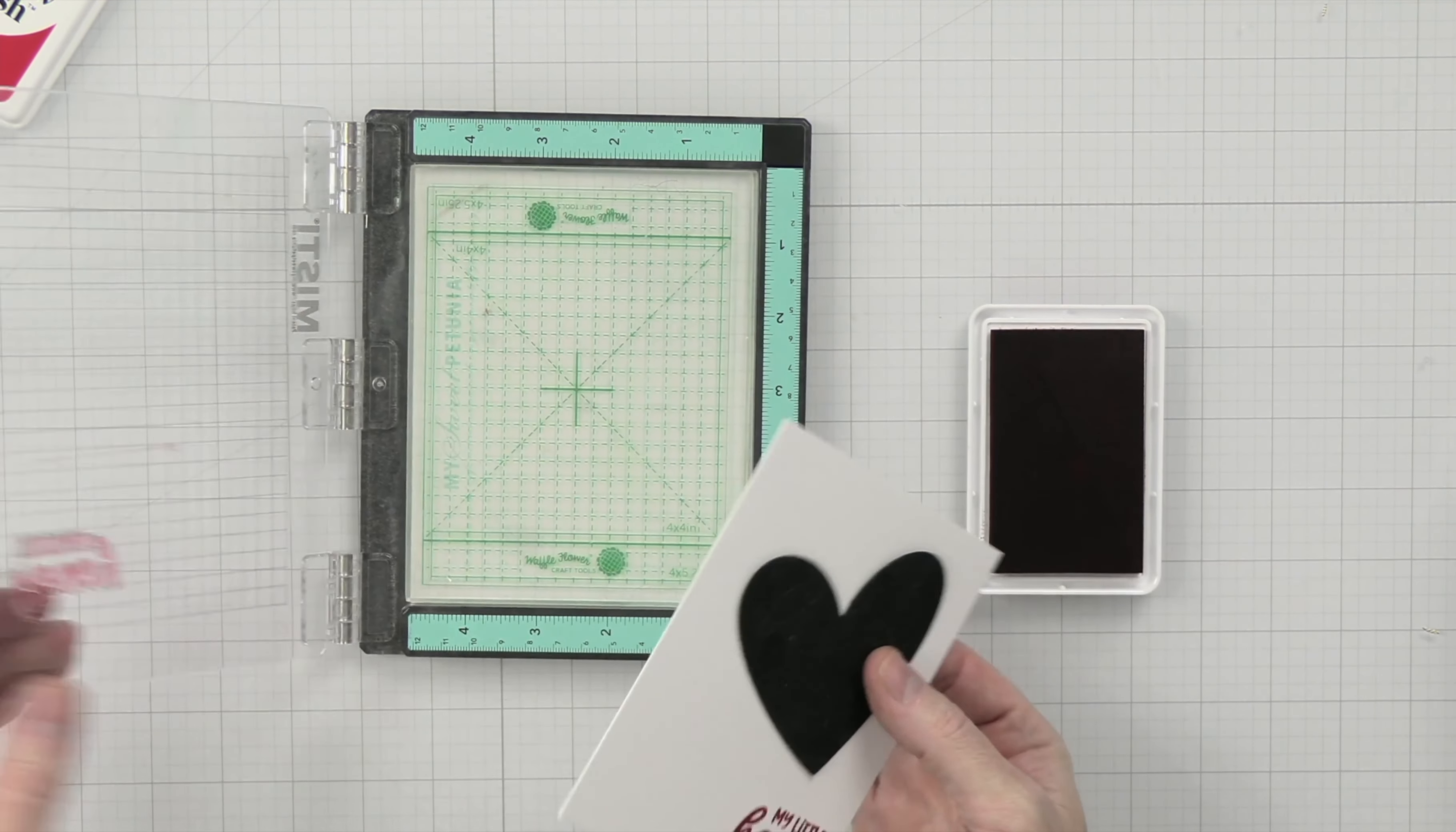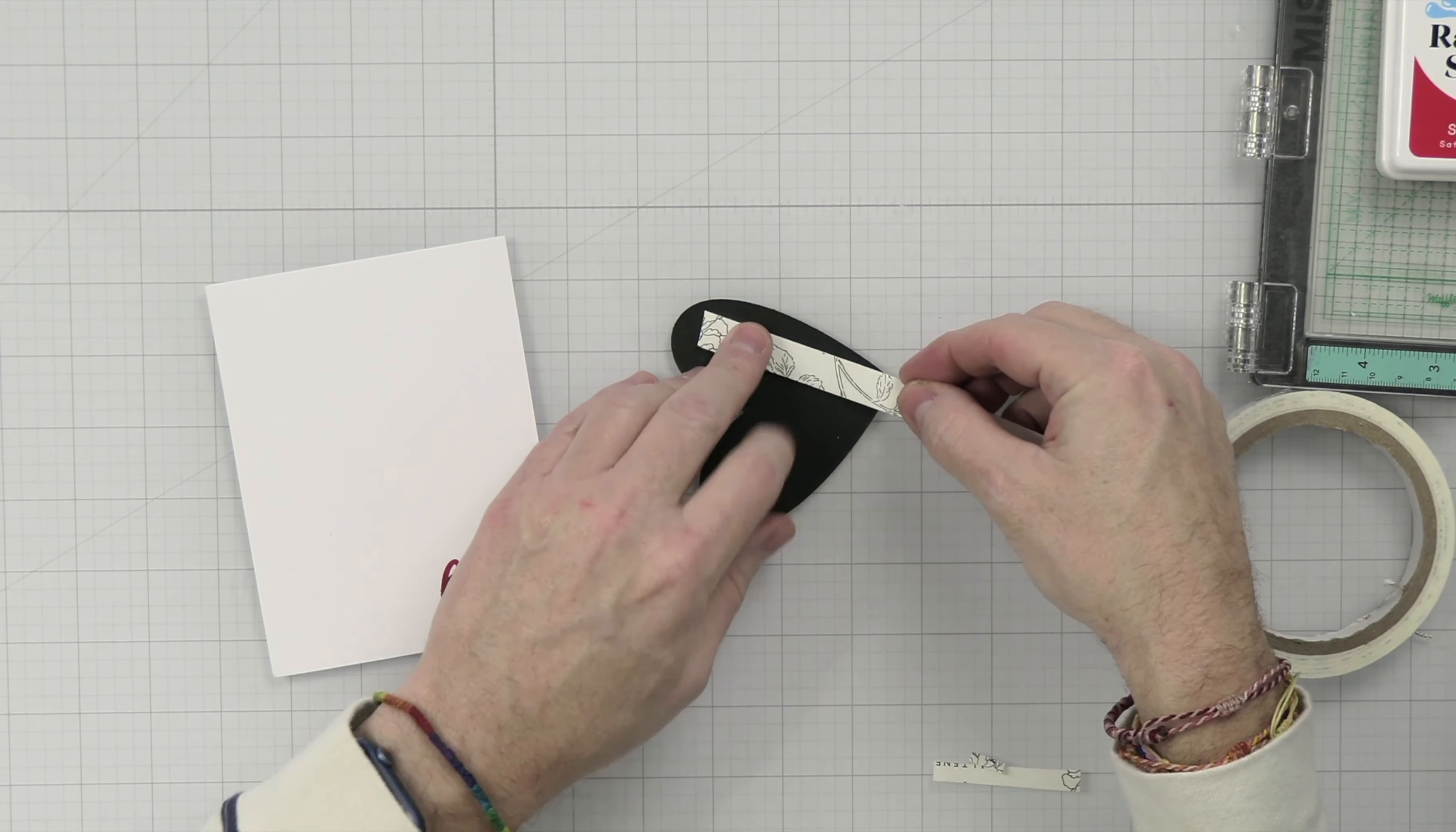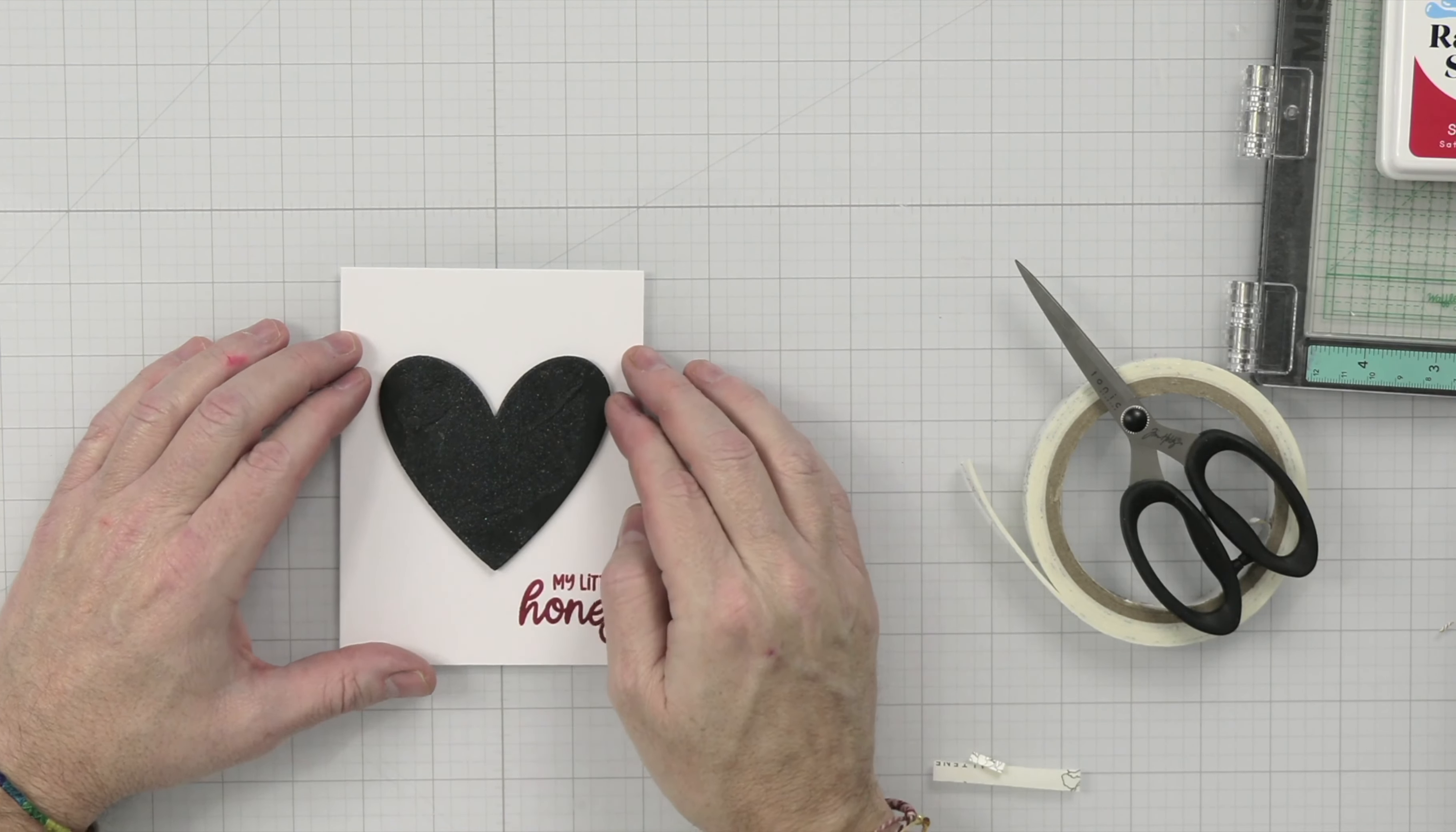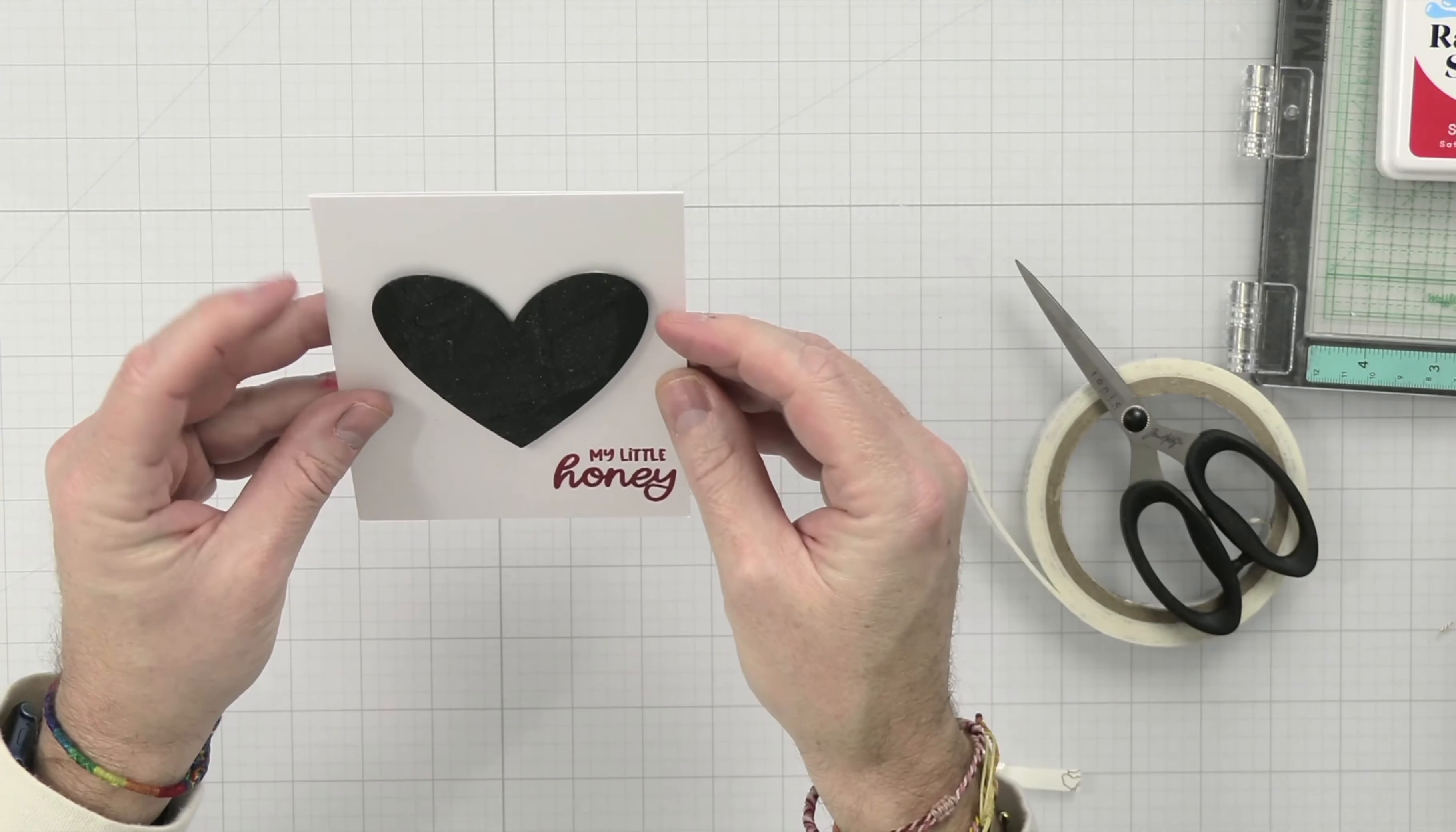Then what I want to do is put some foam tape on the back of this heart. So there we have that. That looks good. Let me just make sure. That looks great.